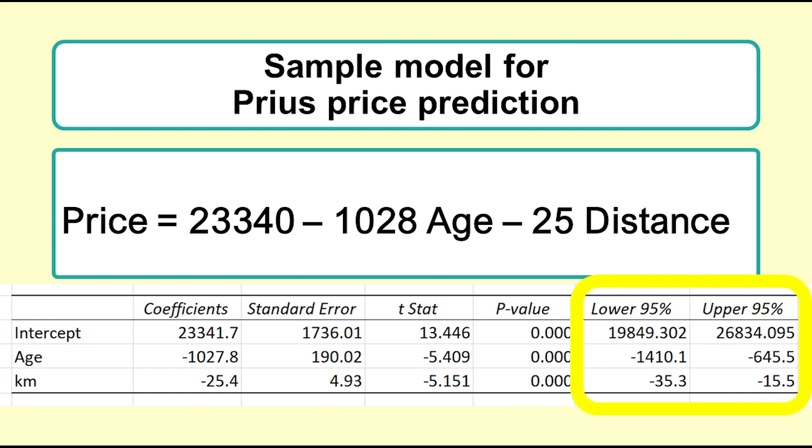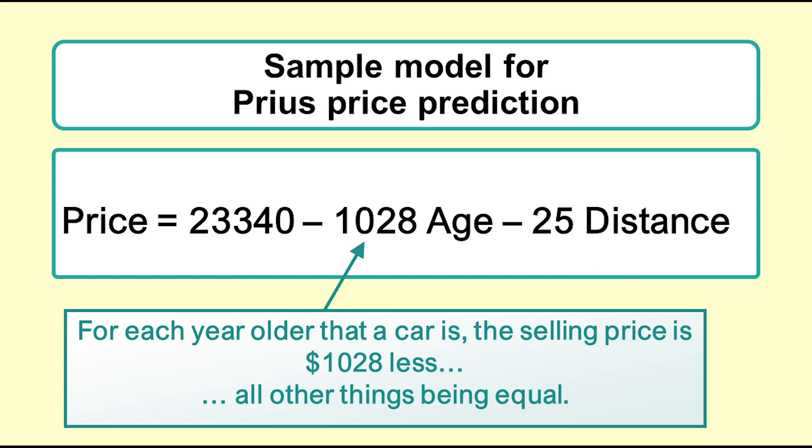Computer packages give us the information that we need for inference. In Excel, the standard output for regression gives us the 95% confidence intervals. In the Prius prediction model, the value negative 1,028, which is the coefficient of age...